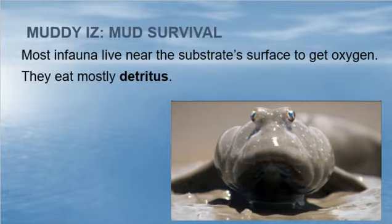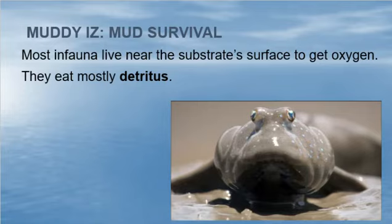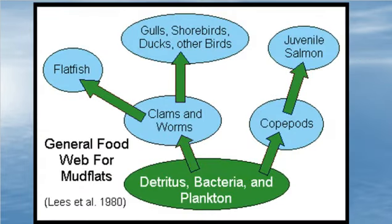Most infauna live near the substrate surface to get oxygen, and they eat mostly detritus. Remember what detritus is? It's dead organic material and the creatures that live in it as well. So that's what most of them eat. Looking at the general food web for the mudflats: we have clams and worms eating detritus, bacteria, and plankton. Copepods will eat those, and small salmon will eat the copepods. Gulls, shorebirds, ducks, and flatfish eat the clams and worms.